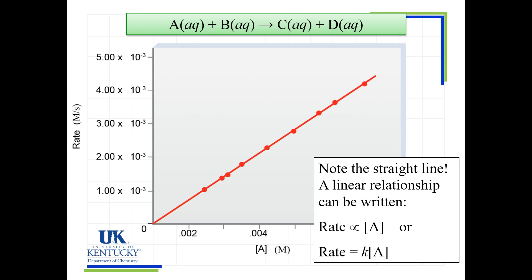If it's directly proportional to its concentration, we can replace that proportionality symbol with an equal sign. So now we have a rate law that was experimentally determined — they had to do initial monitoring of how fast the reaction was going.